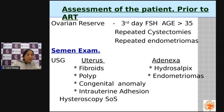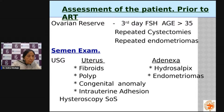The uterus itself is assessed for tumors like fibroids, intracavity growths, or defects in the uterine cavity. If required, a telescope procedure called hysteroscopy is performed. If the fallopian tubes are badly damaged and there is fluid collection — called hydrosalpinx — this must be addressed, because the fluid from the hydrosalpinx can regurgitate and wash out the embryo from the uterus.